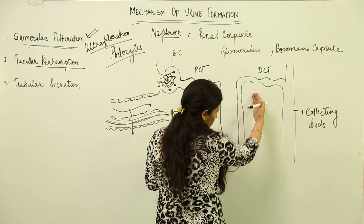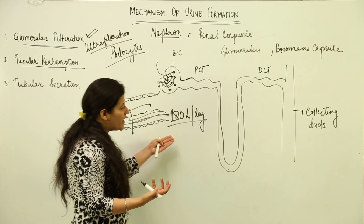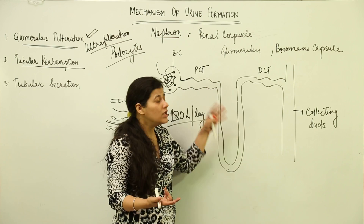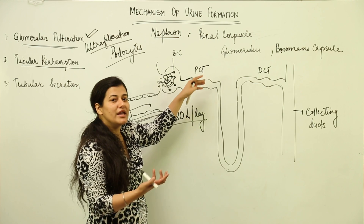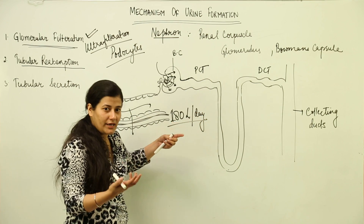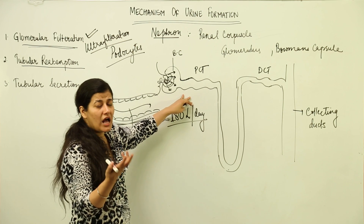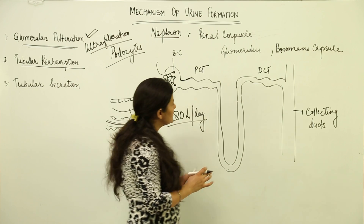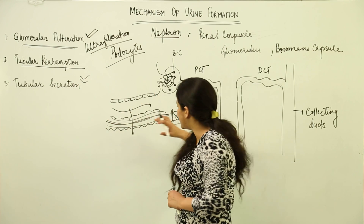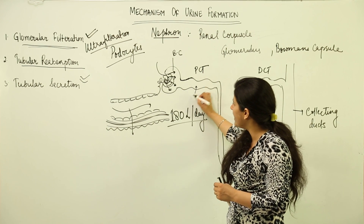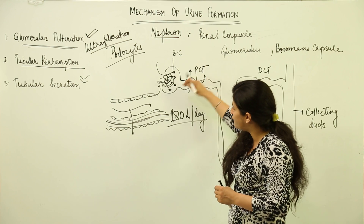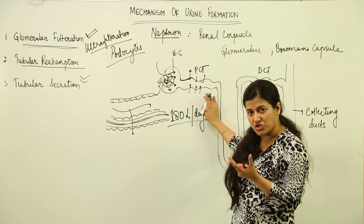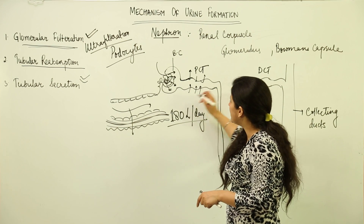Apart from reabsorption into interstitial cells, there is a capillary process known as vasa recta, which is responsible for the concentration of urine — we will deal with that in the counter-current mechanism. Once urine enters the PCT, reabsorption of ions and substances takes place, including glucose, amino acids, sodium, bicarbonate ions, and other ions needed to be taken back. Tubular secretion also takes place to maintain ionic balance — whatever ionic gradient is created must be balanced, so some substances go back by secretion from the cuboidal epithelial cells.